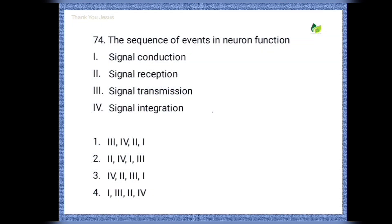The sequence of events in neuron function — we have to put them in the correct order. The correct answer is: first signal reception, then signal integration, then signal conduction, and then signal transmission.